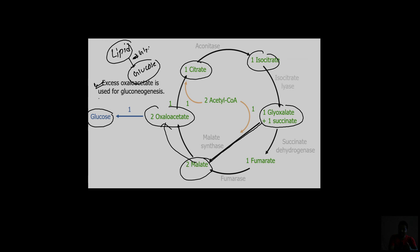So the glyoxylate cycle produces oxaloacetate which enters gluconeogenesis to make glucose. If you understand the glyoxylate cycle, these are related processes. In the next class we will discuss gluconeogenesis. Thank you so much for watching. If you liked the video, please like, subscribe, and share. Bye bye.